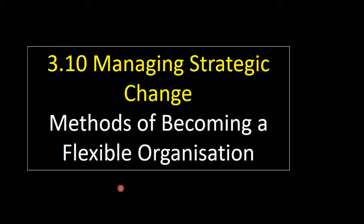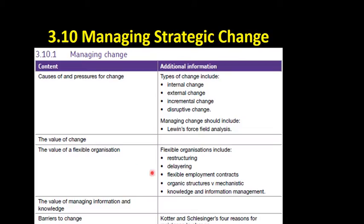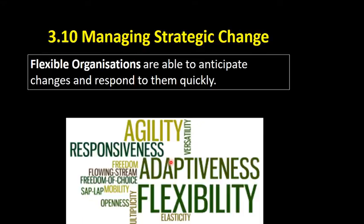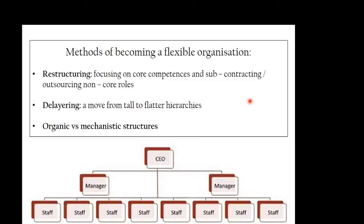Hi, this is Mr. Evans. This video looks at how to become a flexible organisation, and I'm going to go through the first four bullet points in the specification. A flexible organisation is one that's able to anticipate changes and respond to those changes quickly. So how does an organisation do this?